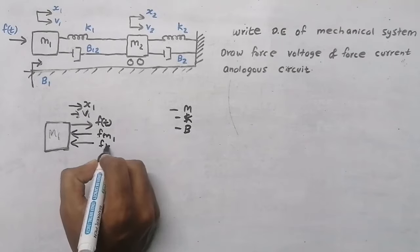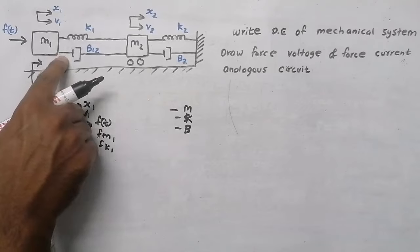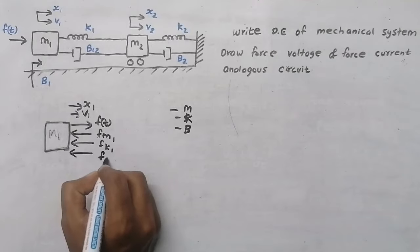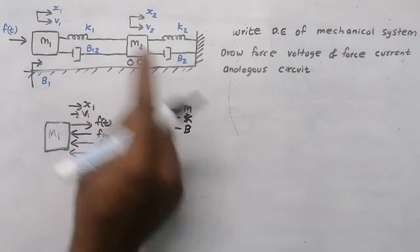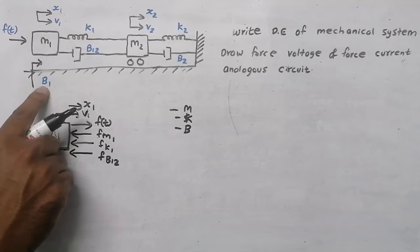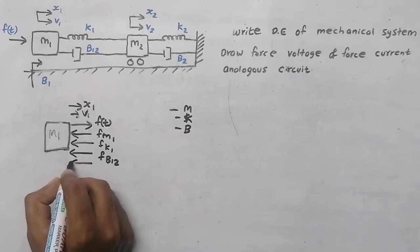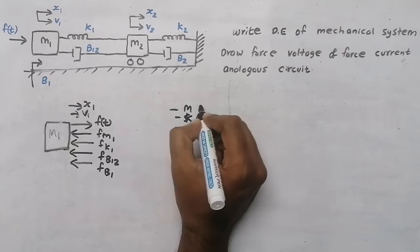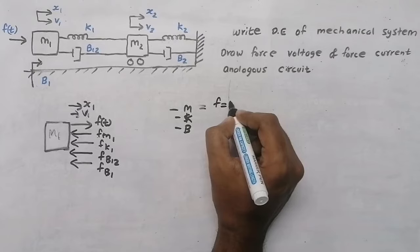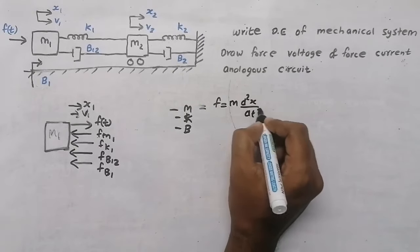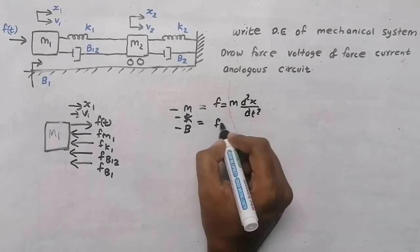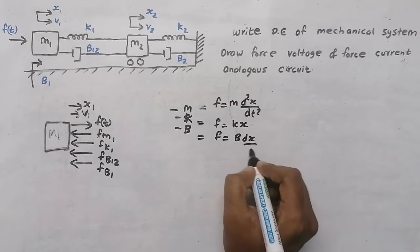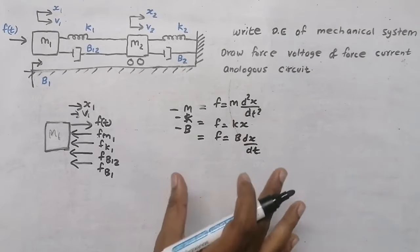There is also an opposing force due to dashpot b12, which is common to both mass 1 and mass 2, and one more opposing force due to dashpot b1. For mass, the force equation is m·(d²x/dt²); for spring it is kx; and for dashpot it is b·(dx/dt). These equations will be discussed in previous videos.